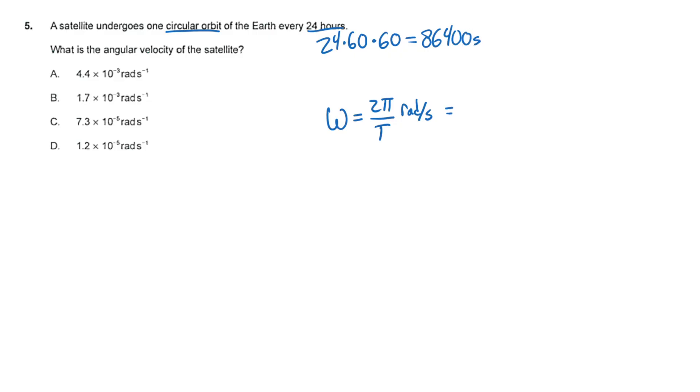So to find the angular velocity, we take 2 pi and divide it by that number of seconds, and what we will get is answer choice c.